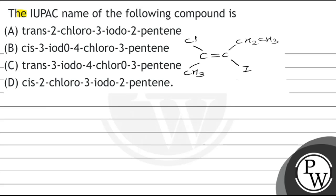Let's see this question. The IUPAC name of the following compound is: Option A: trans-2-chloro-3-iodo-2-pentene. Option B: cis-3-iodo-4-chloro-3-pentene. Option C: trans-3-iodo-4-chloro-3-pentene. Option D: cis-2-chloro-3-iodo-2-pentene. The key concept of this question is...